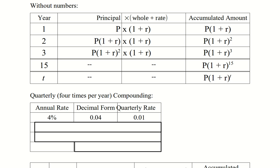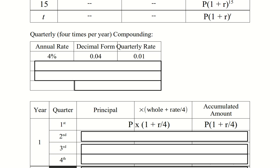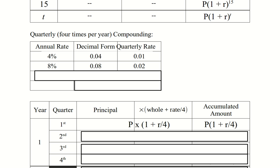Now let's be more careful about our rate. Let's talk about quarterly compounding — that means four times per year. If we have an annual rate of 4%, the decimal form is 0.04, and the quarterly rate is 1% — we divide by 4. Similarly, an annual rate of 8% gives a quarterly rate of 0.08 divided by 4. And for any rate R, the quarterly rate would be R divided by 4.